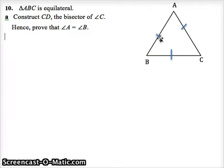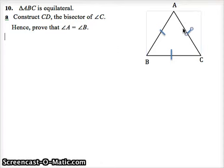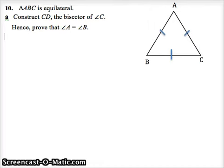We actually have to prove that in this equilateral triangle, angle A equals angle B. We can't just say it's equilateral so all angles are 60 — we're not allowed to say that. The only information given is that it's equilateral, meaning three equal sides, and we're being asked to prove that two of the angles are equal, that angle B equals angle A.